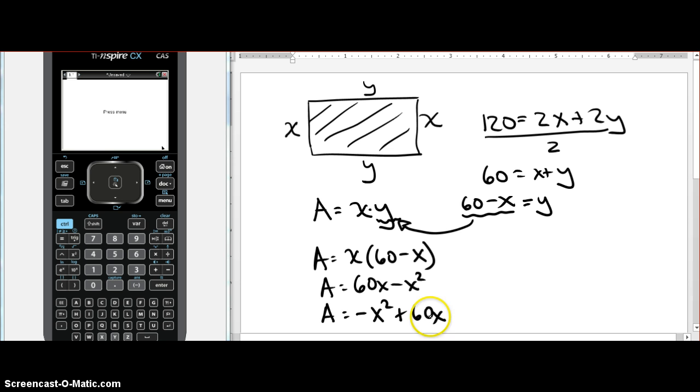Now this is very useful, because I can now use my quadratic, which we're used to, to find the maximum. How do we find the maximum? Well, we're looking for the vertex. And how do we find the vertex? Negative b over 2a.